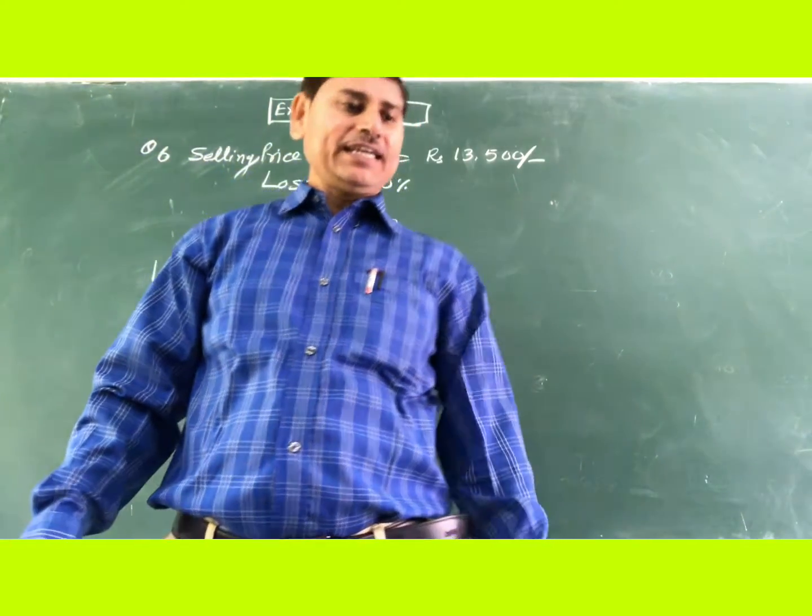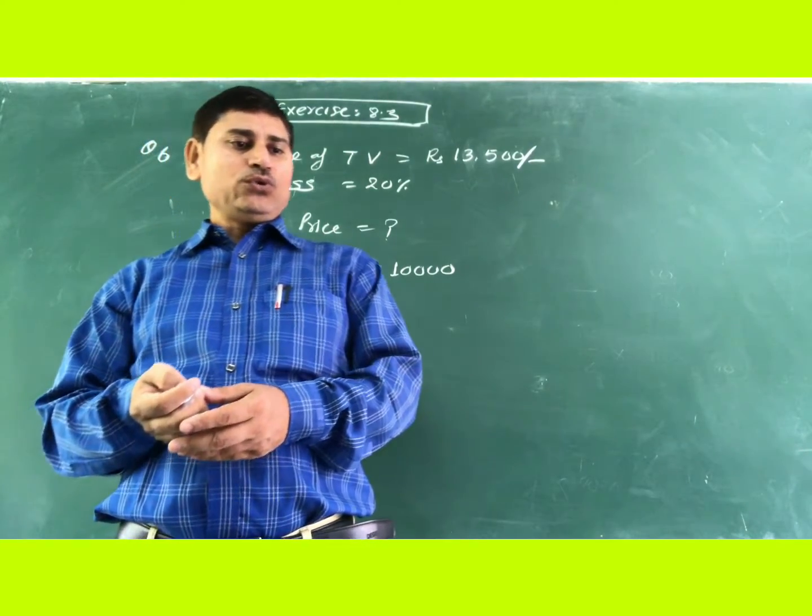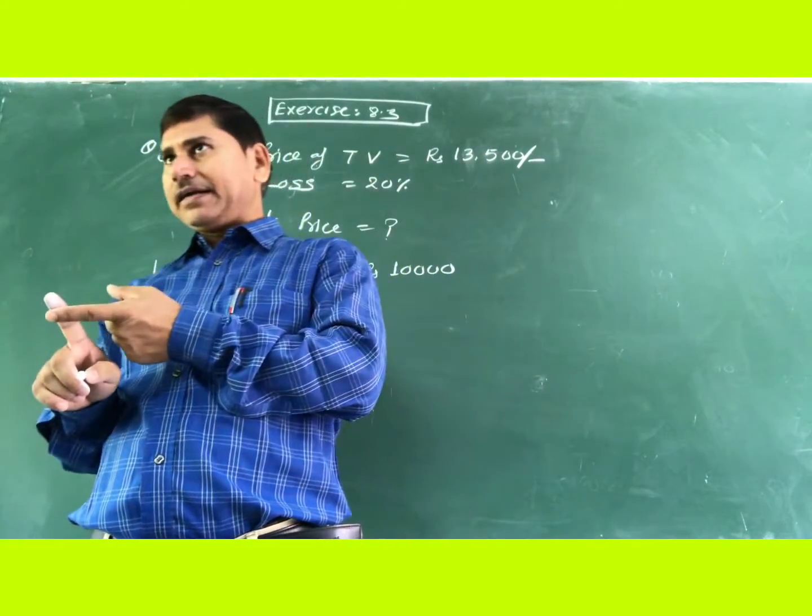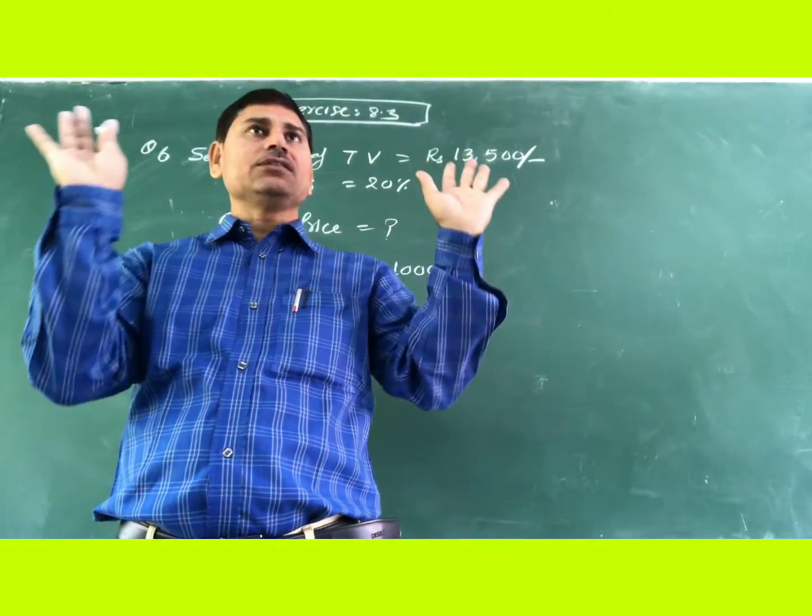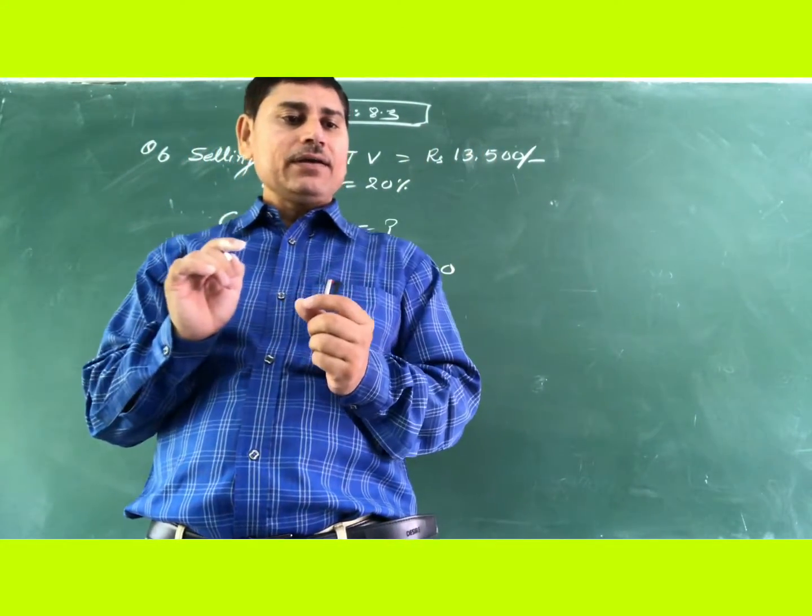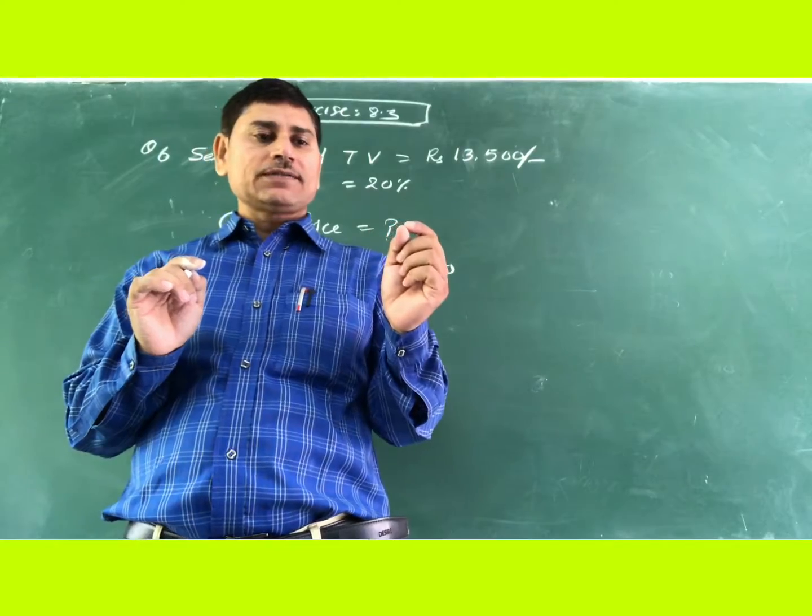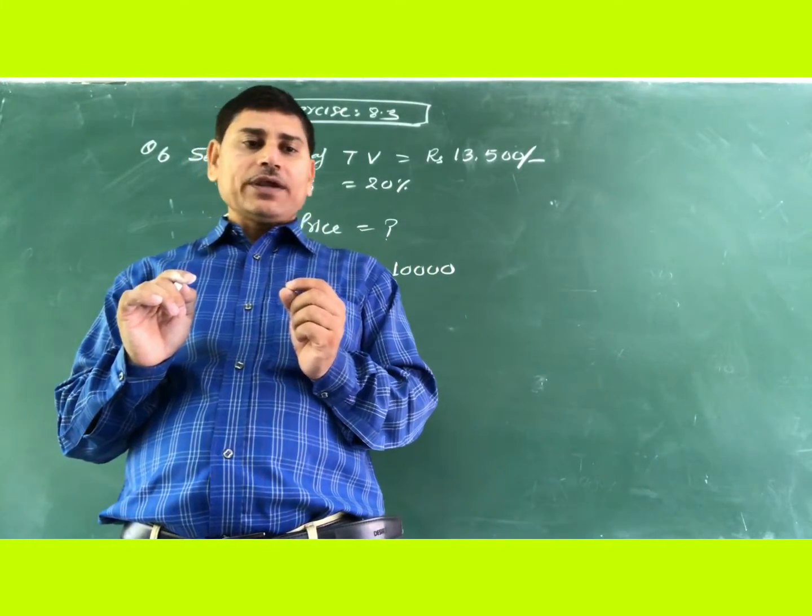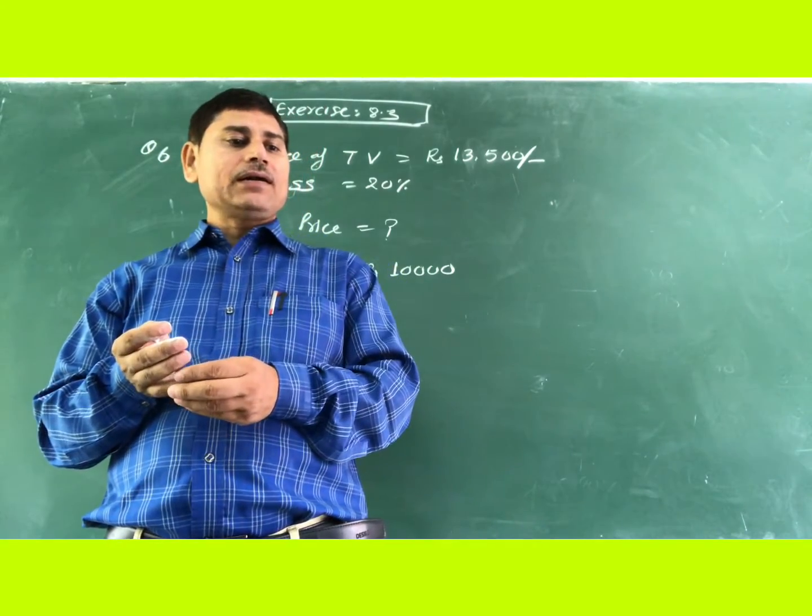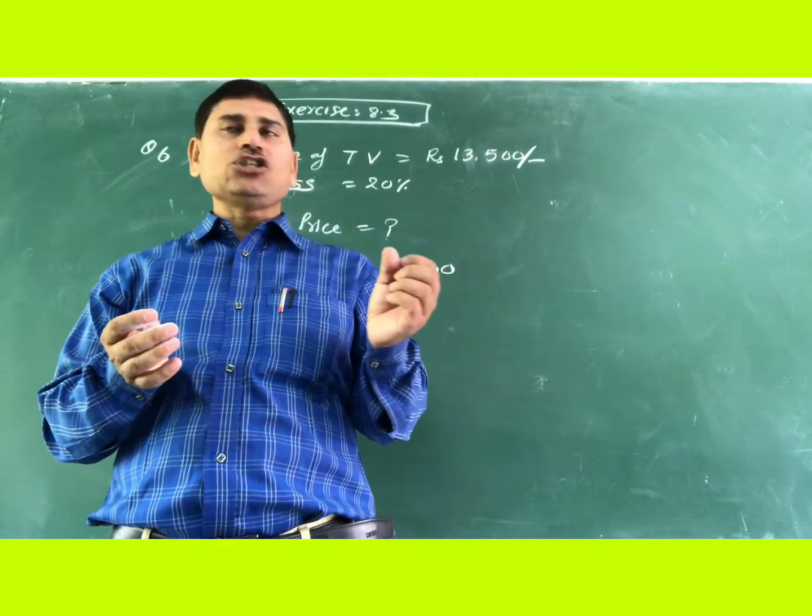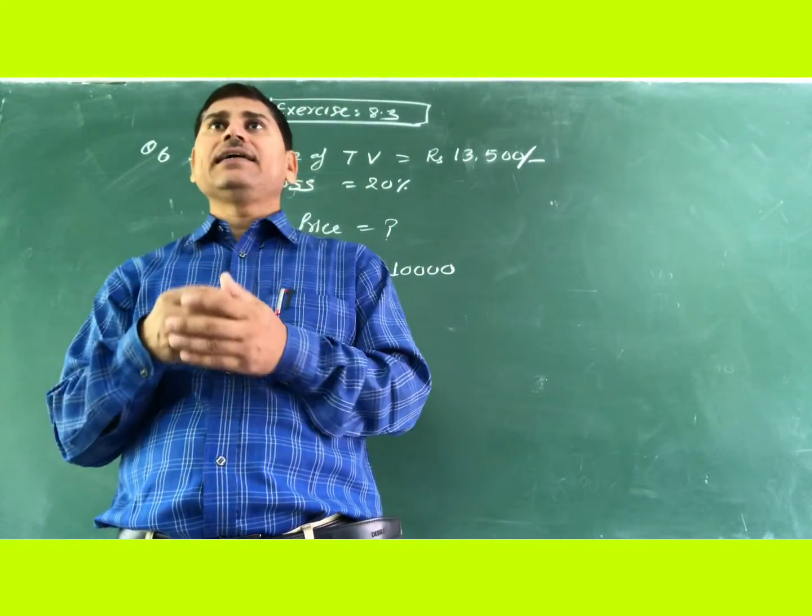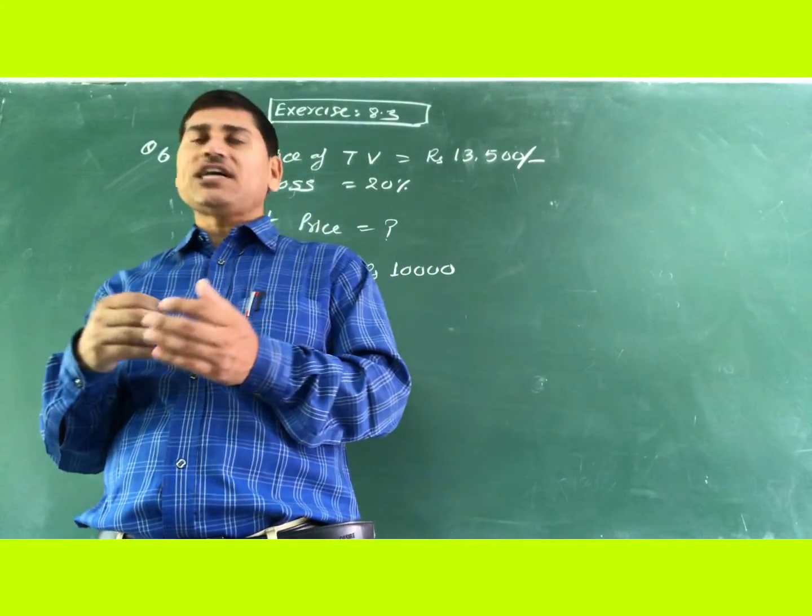Once again, you see here: Juhi sells a washing machine for rupees 13,500 (sells means selling price) and she lost 20 percent in the bargain. What was the price at which she bought it? What was the cost price?